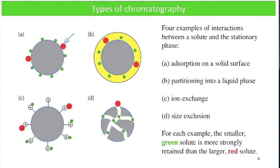Polar molecules will adsorb or stick to the surface for some period of time, and then as the mobile phase keeps flowing past the stationary phase particles, the molecules will partition away from the stationary phase, move down the column a little bit, then find another piece of stationary phase that they're attracted to, and so on and so forth. That's called adsorption chromatography.